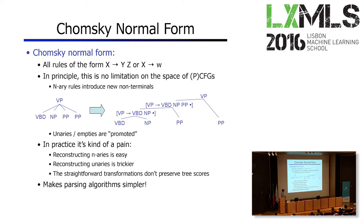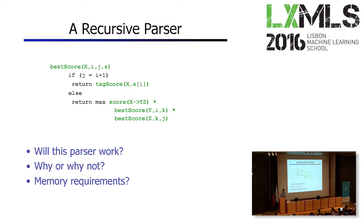We're also going to keep track of unary rules, so our grammar won't be in strict Chomsky Normal Form. In addition to binary rules 'X → Y Z' and terminal rules 'X → word w,' we'll also allow unary rules 'X → Y,' because those exist in our original trees. We won't allow empty rewrites. That's why I said it's Chomsky Normal Form plus-plus — it makes it easier to write our parsing algorithms.